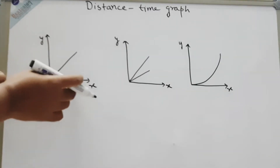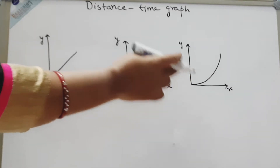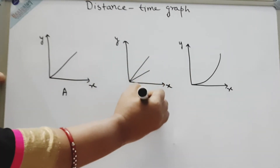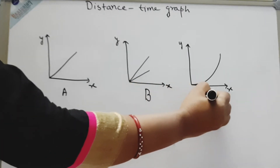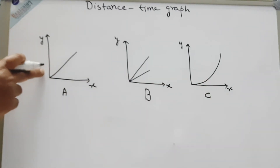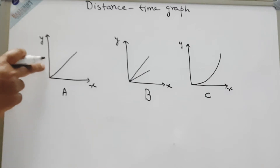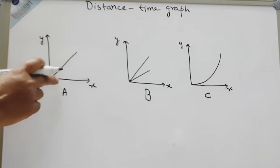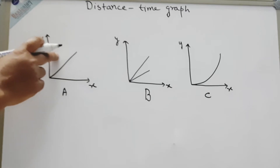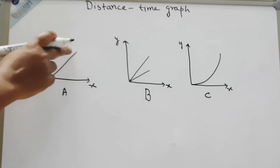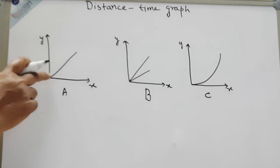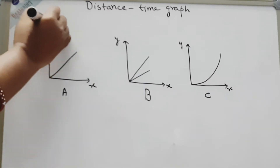These are three different types of distance-time graphs: Graph A, B, and C. Graph A is known as the graph for steady speed because equal distance has been covered in equal time. A straight line passing through the origin is known as the graph for steady speed.